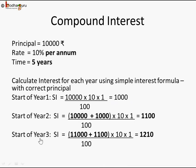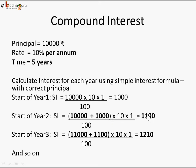For year three, the previous principal was 11,000 plus the 1,100 earned in year two, so 12,100 rupees becomes the principal for year three. The interest for year three is 12,100 into 10% into 1 by 100, which is 1,210 rupees. Every year the principal keeps increasing because you add the previous year's interest to it, and hence the interest also keeps increasing year on year.